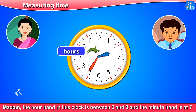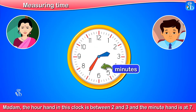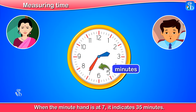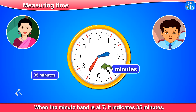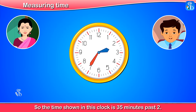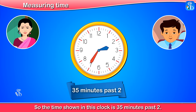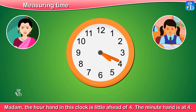Madam, the hour hand in this clock is between 2 and 3 and the minute hand is at 7. When the minute hand is at 7, it indicates 35 minutes. So the time shown in this clock is 35 minutes past 2.